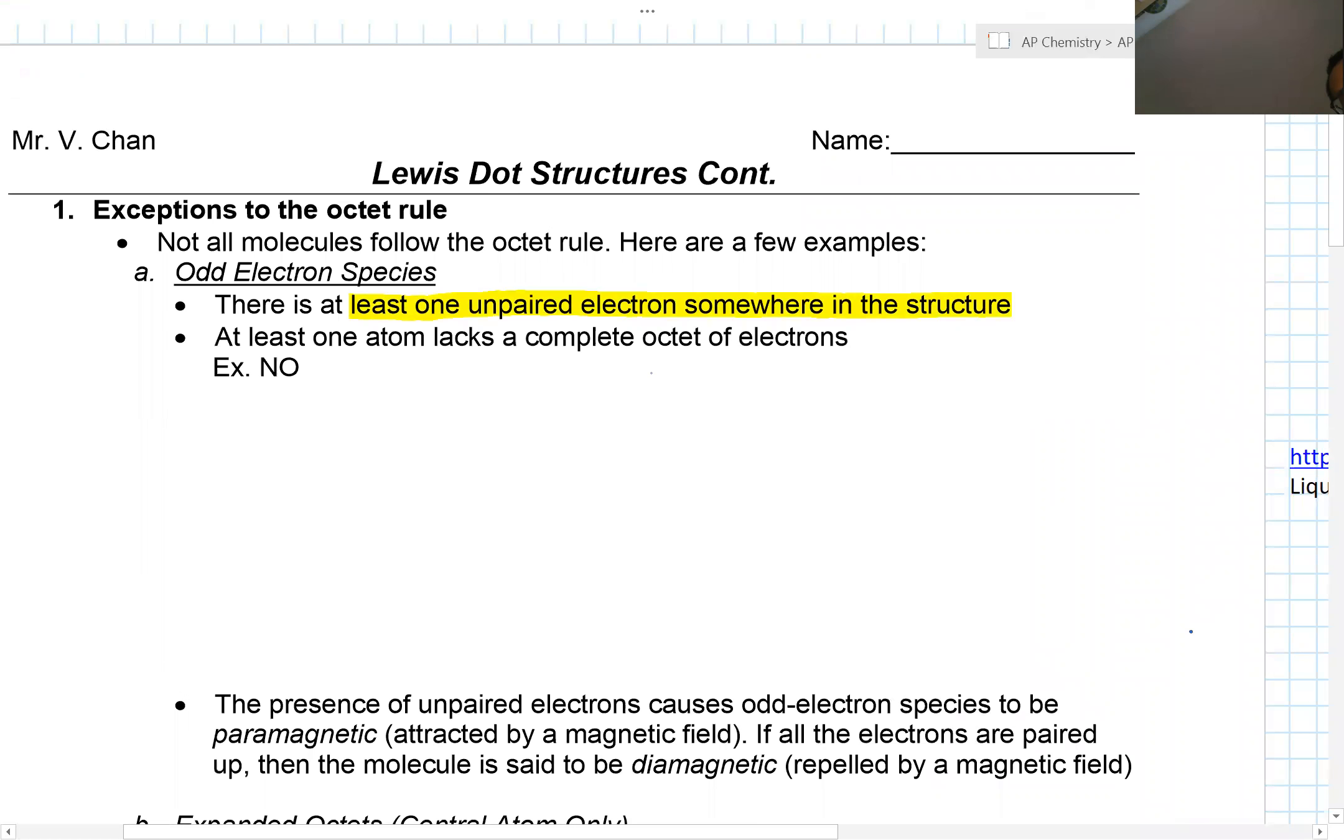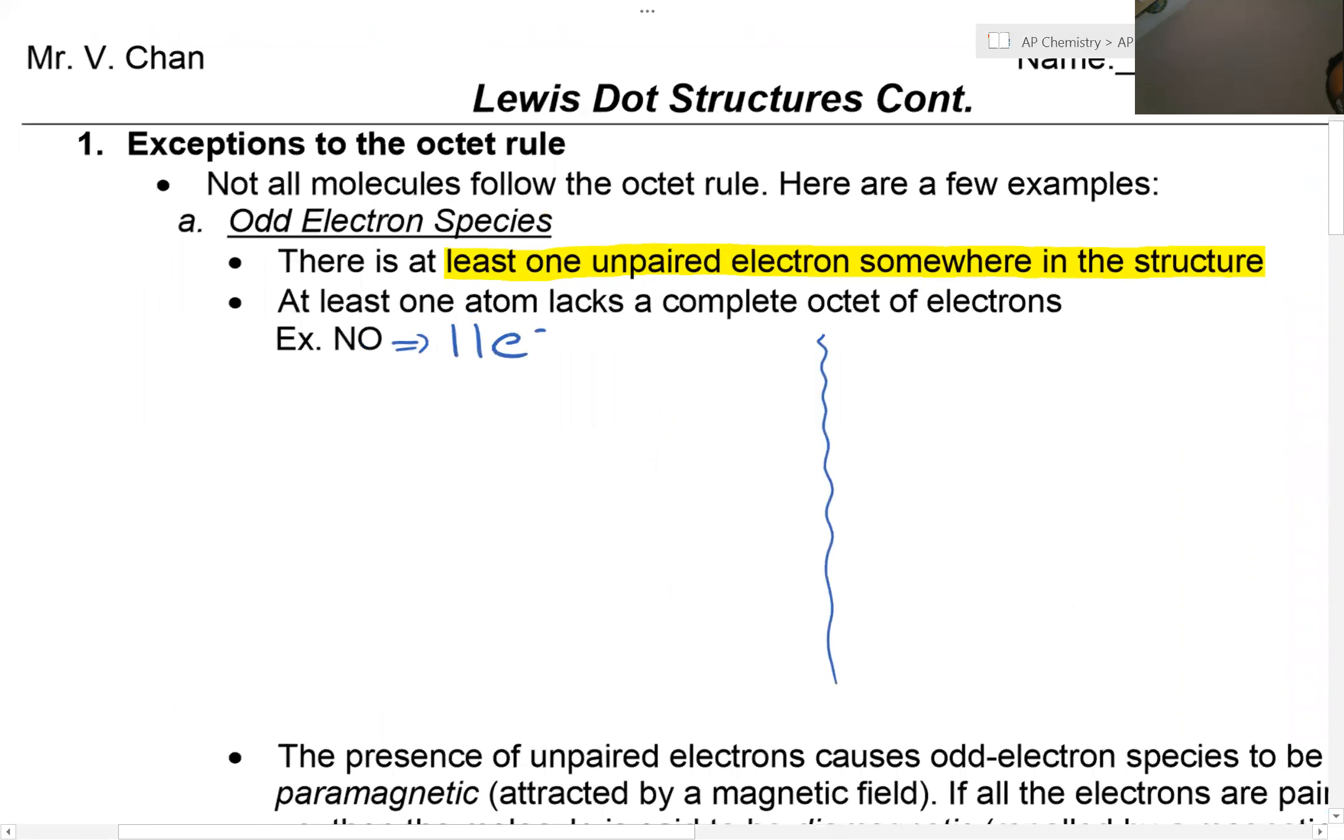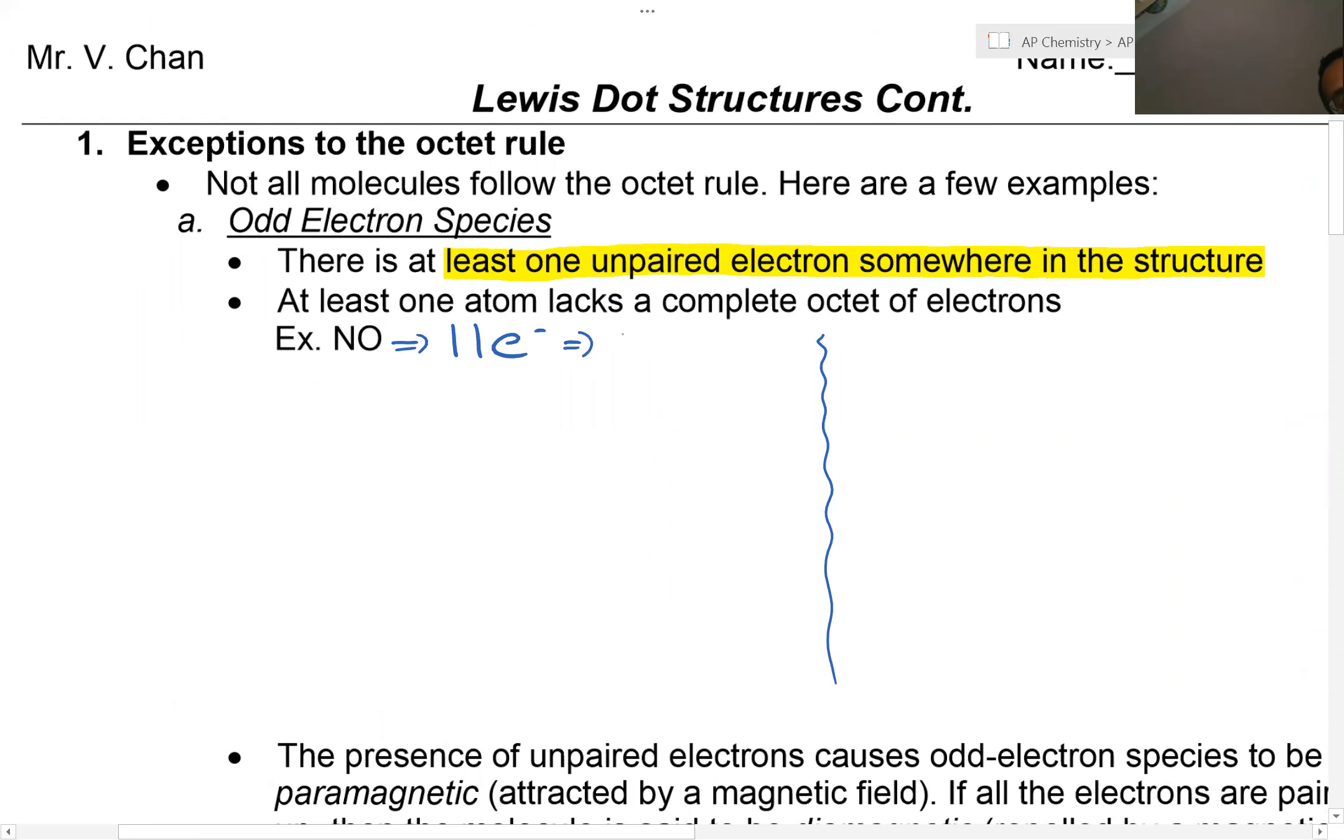An example would be nitrogen monoxide. Nitrogen monoxide has 11 electrons or five and a half pairs. So what you would have is your nitrogen with oxygen, one two, and you have this unpaired electron. So this is my half pair, you have an unpaired electron.